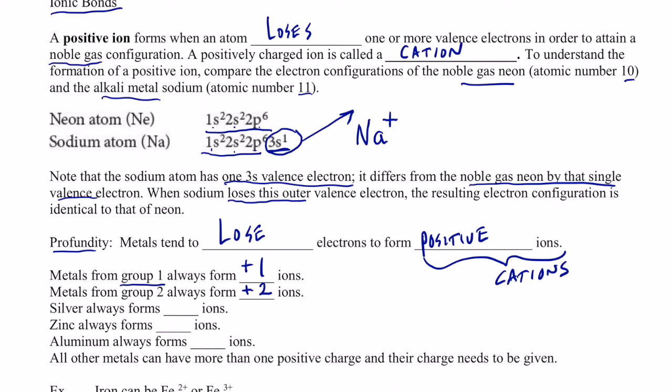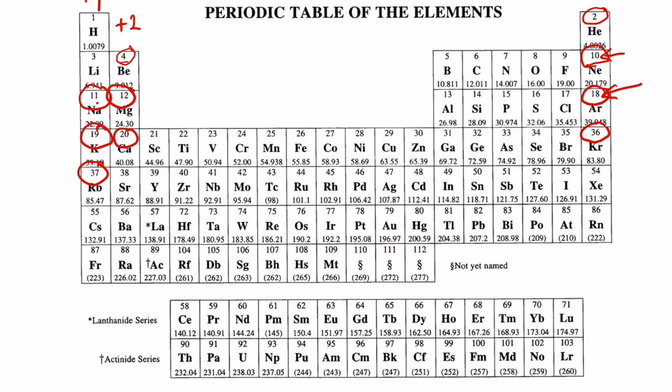Silver will always form a positive 1 ion. Zinc will always form a positive 2 ion. Aluminum will always form a positive 3 ion. So I'm going to write those on my periodic table here for you. Silver will always form positive 1 ions. Zinc will always form positive 2 ions. And aluminum will always form positive 3 ions. And never anything else.